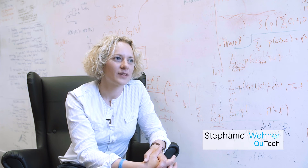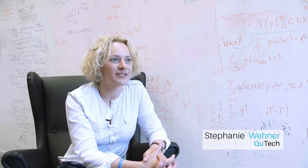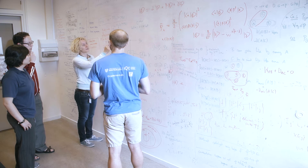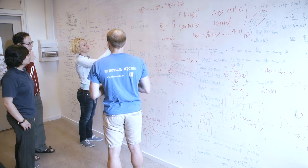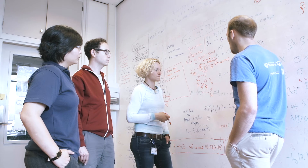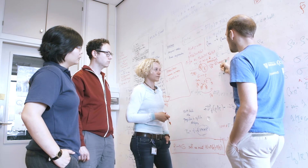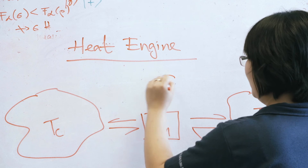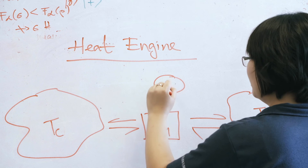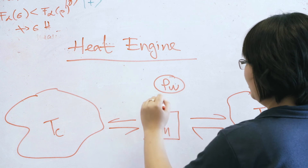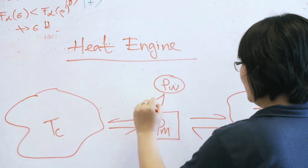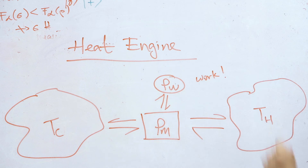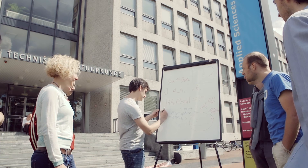I'm Stefanie Wiener and I work on the theoretical challenges of building a quantum network. To make a quantum network with real devices we need to correct errors and distribute entanglement effectively. Interestingly, quantum information theory also tells us a lot about other areas of physics. We also work on designing robust application protocols.